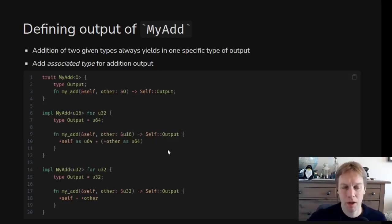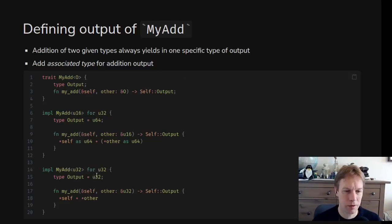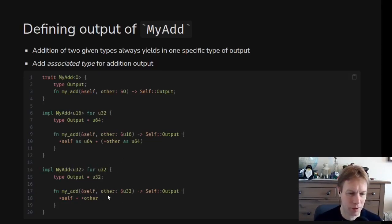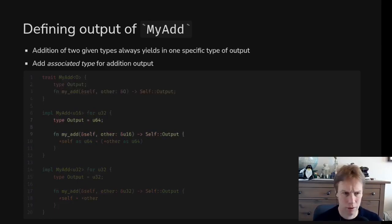We can do something very similar to say: when I add a u32 to a u32, the output is a u32. Interestingly, you might have expected the output to be a u64, but this is just an example — you might say adding two u32s gives you a u32, and that's what we've done here. That might overflow.